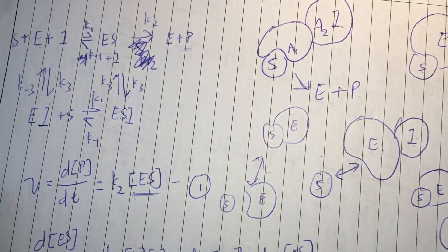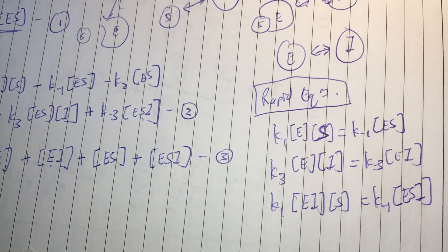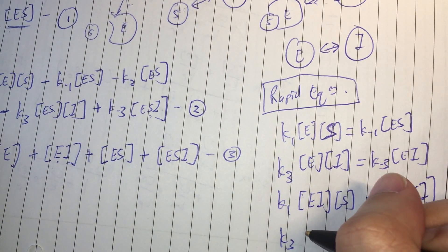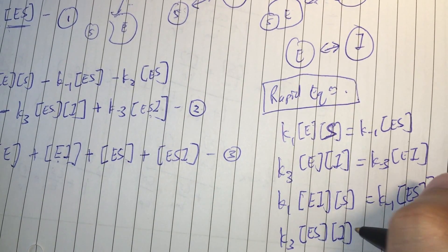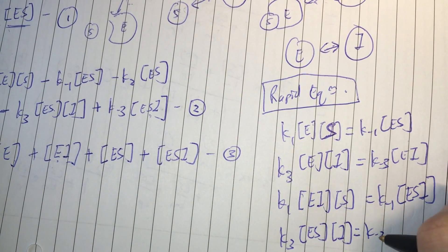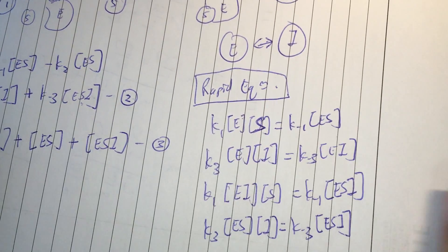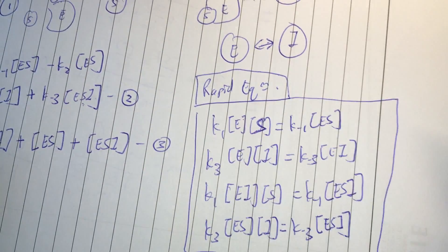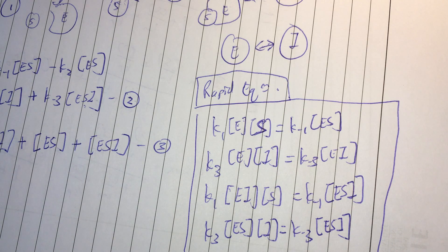So, K3 ES and I equals to K minus 3 ESI. So, that is our four... These are our four rapid equilibrium assumption equations.